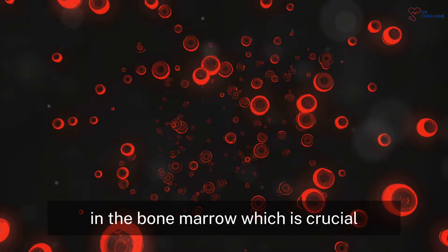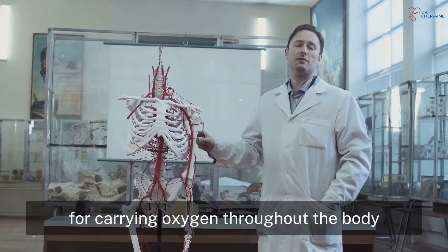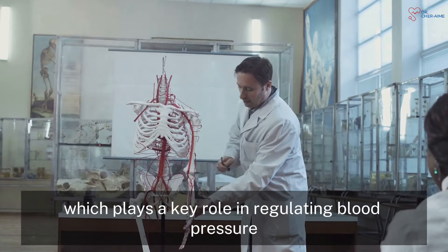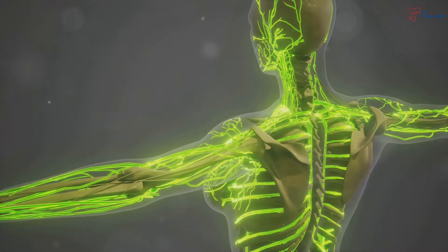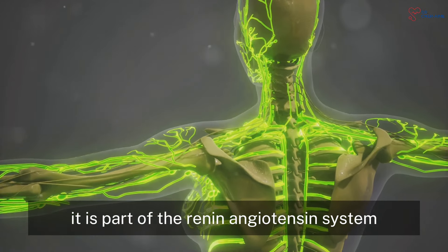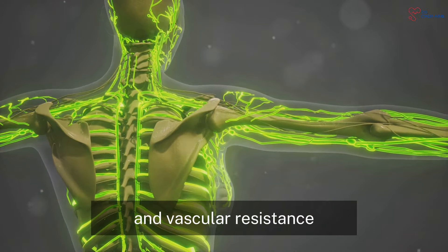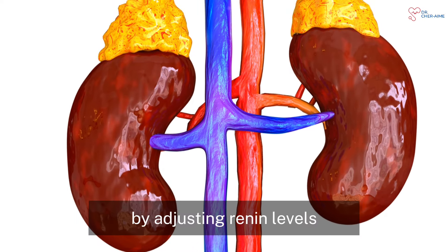The kidneys also produce renin, which plays a key role in regulating blood pressure. It is part of the renin-angiotensin system, which helps control blood volume and vascular resistance. By adjusting renin levels, the kidneys help maintain stable blood pressure.